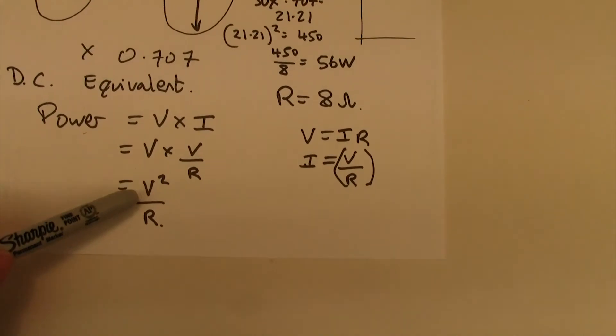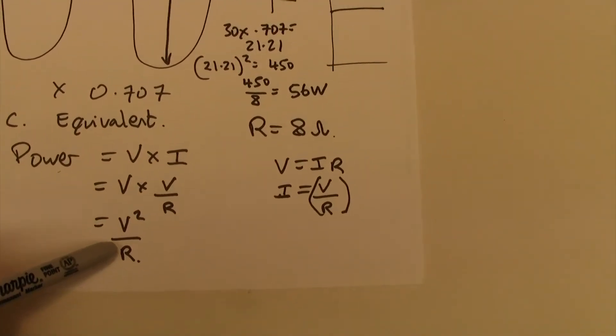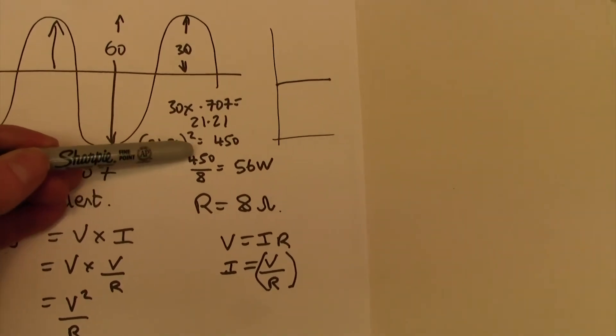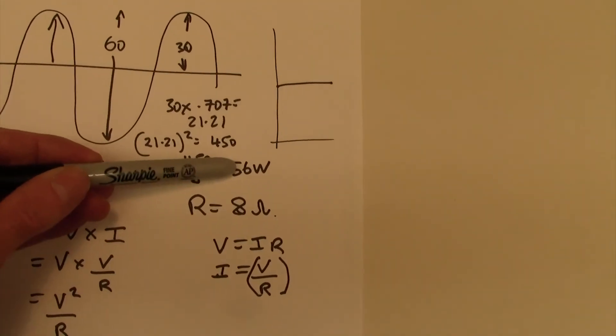Our formula is V squared over R. And remember, R is our resistance of our speaker, or our load, which is 8 ohms in this particular case. 450 divided by 8 is 56 watts.